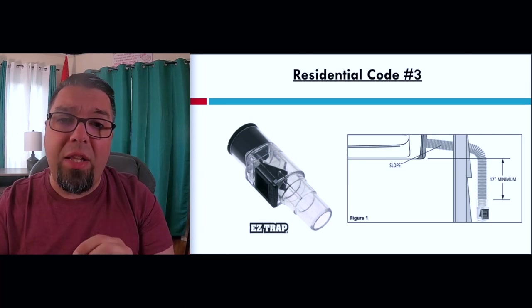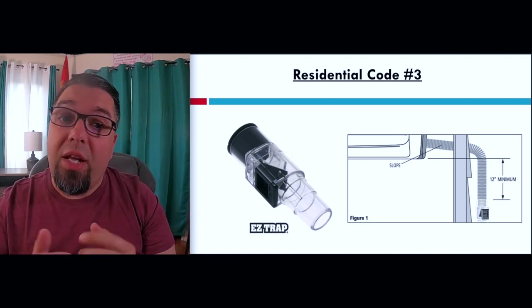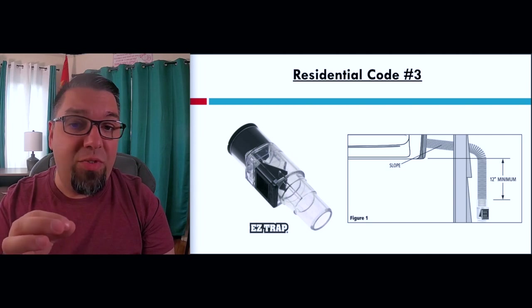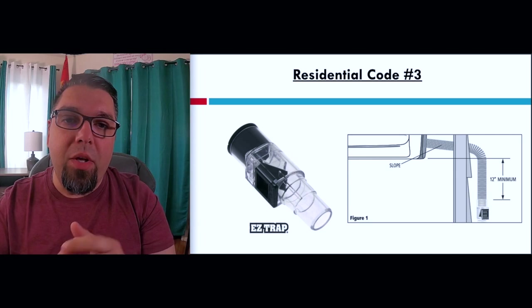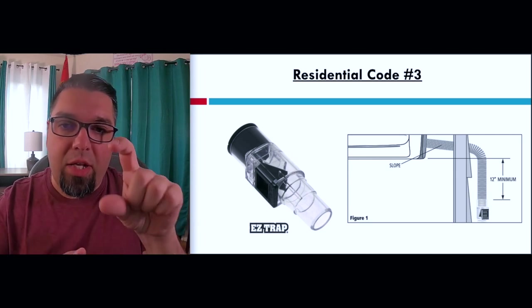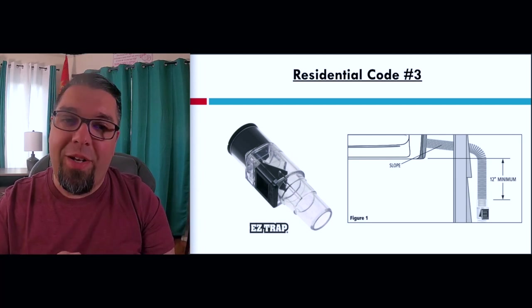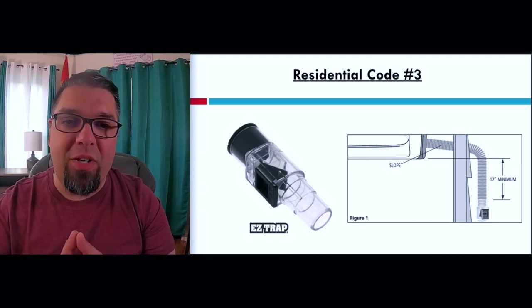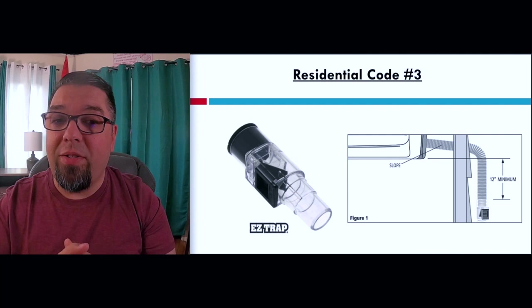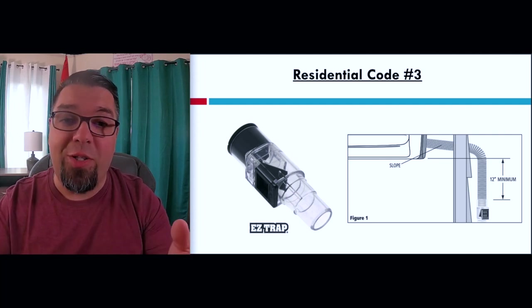Any drain line for a system that is less than 20 tons needs to be at least three-quarter inch — this is another piece a lot of people miss because it's easy to put the right size hose that just happens to connect. Residential code number three: easy traps. They're dry traps that go in and stop any insects, smell, or anything else coming in from outside. It's very rarely enforced and it stinks to install after the fact, but it's low cost, particularly if it goes in during installation.